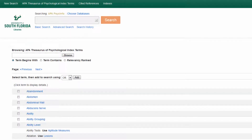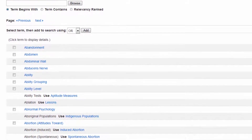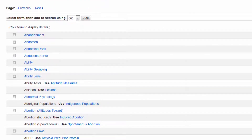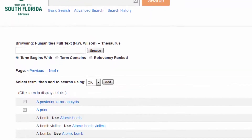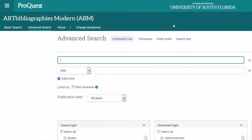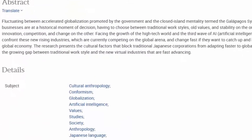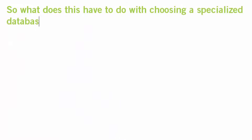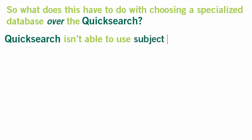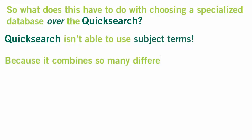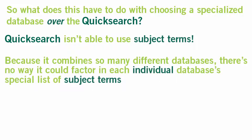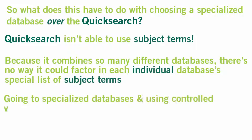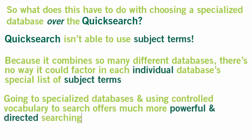Research databases use subject terms, or controlled vocabulary, to categorize materials according to subject, so that all the items on the same topic will have the same subject heading. Because subject terms go straight to the main topic of an article or book, searching in specialized databases and taking advantage of the controlled vocabulary means you'll likely get fewer but more relevant results. You can also use a database's thesaurus to get ideas for more terms and subjects to search. However, QuickSearch isn't able to use those subject terms — because it combines so many different databases, there's no way it could factor in each individual database's special list of subject terms. Going to specialized databases and using the controlled vocabulary to search offers much more powerful and directed searching.